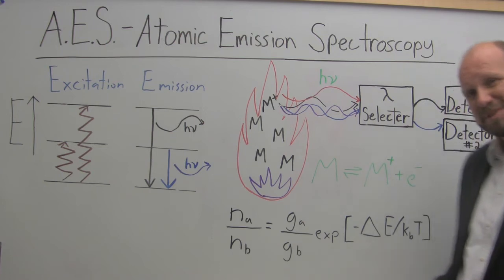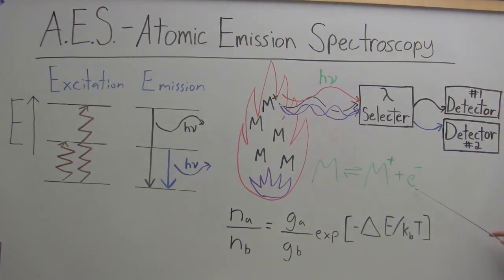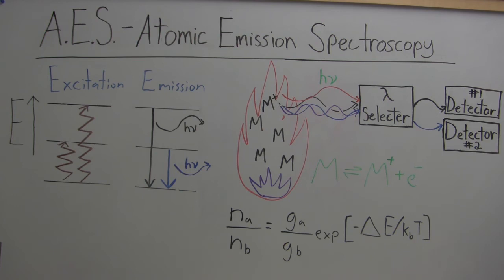Additionally, argon plasmas have a high concentration of electrons, which then, by Le Chatelier's principle, pushes this equilibrium back that direction, causing there to be more of our species in the atomic state.